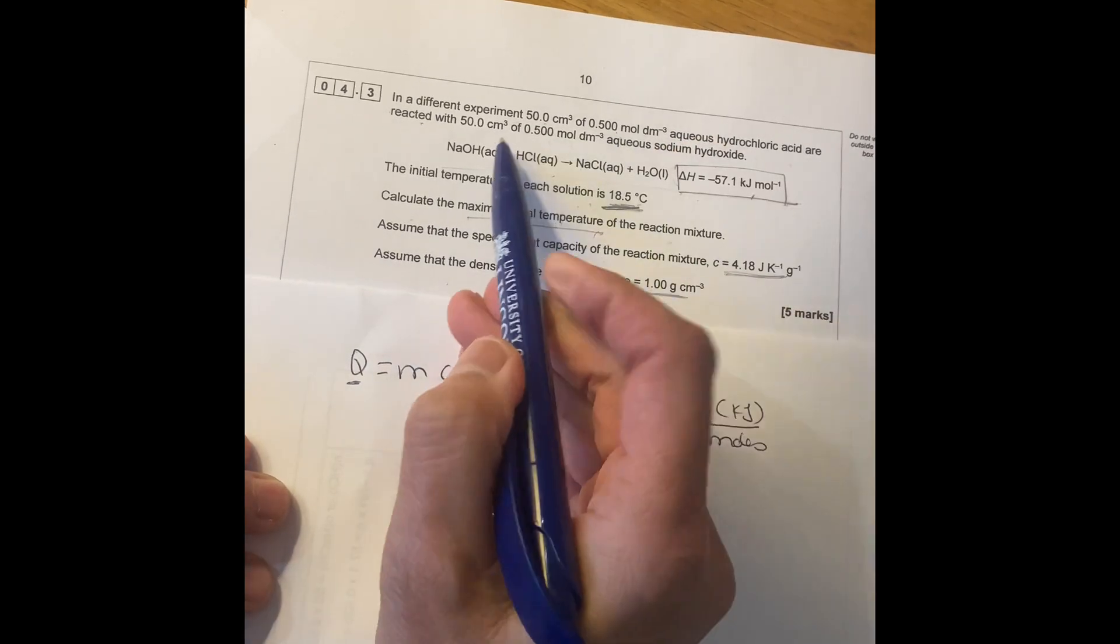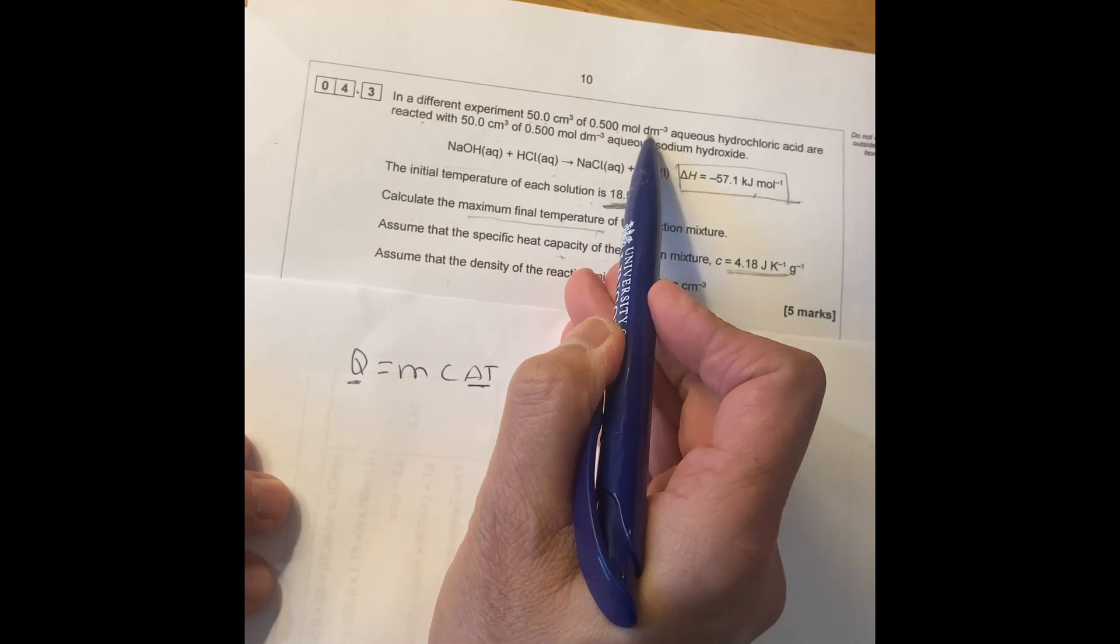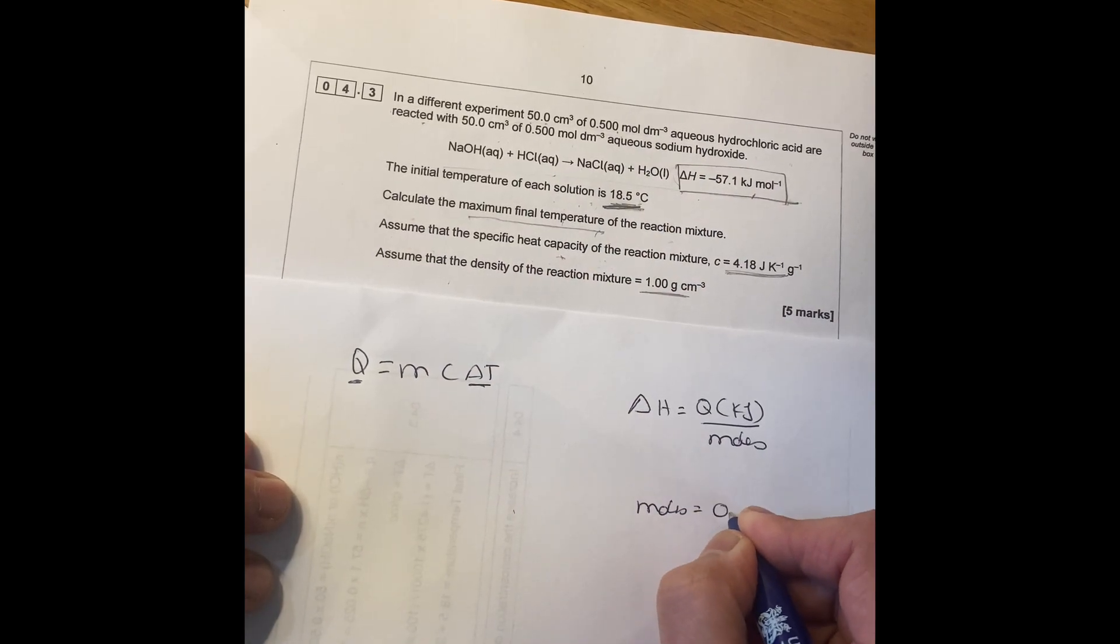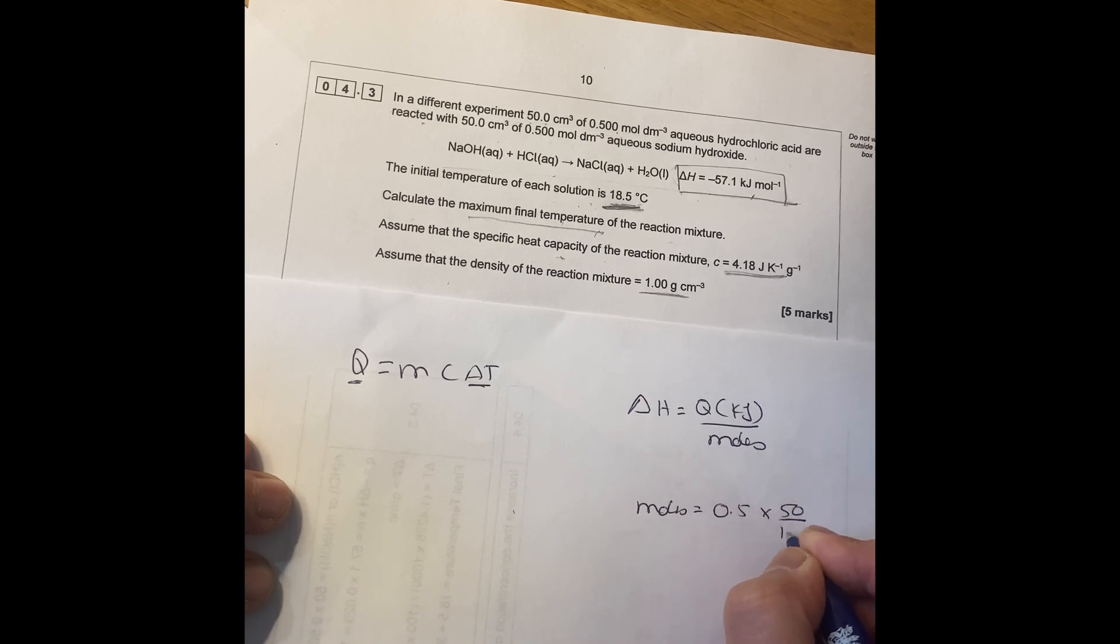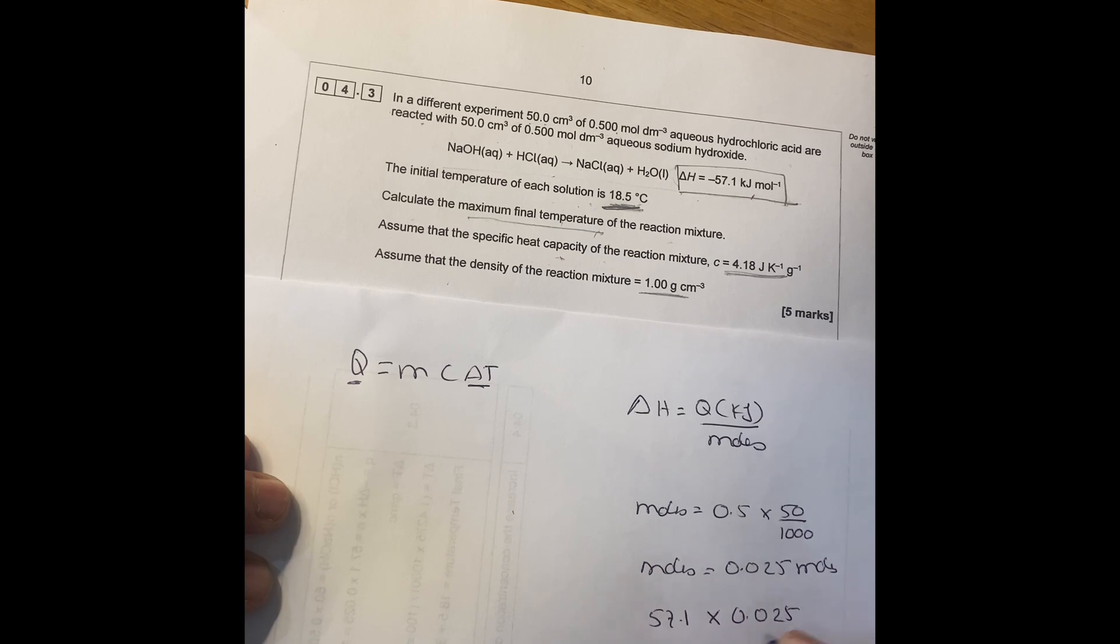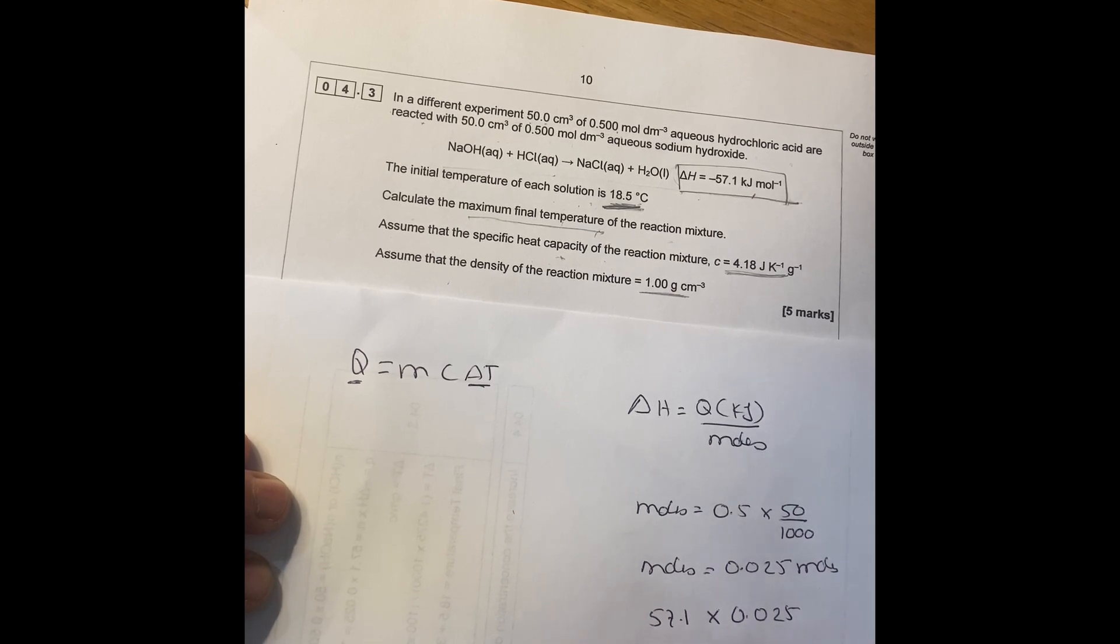Now we can work out moles by multiplying concentration times volume. So it will be moles equals to 0.5 times volume divided by 1000. So moles equals to 0.025 moles.